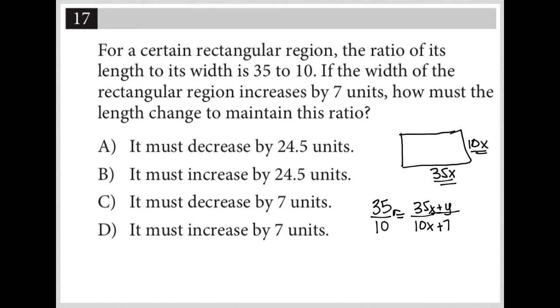So in order to solve this, I need to cross multiply here. So I'd have 35 times 10x plus 7. And then cross multiply there is equal to 10 times 35x plus y. And I'm left with 350x plus 30 times 7 is 210, 5 times 7 is 35, so plus 245 equals 350x plus 10y.